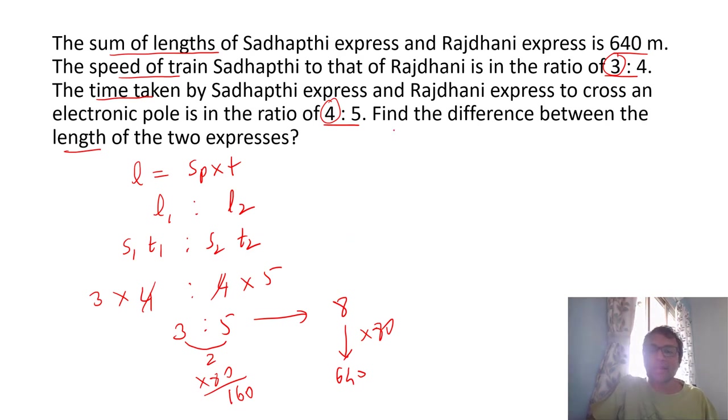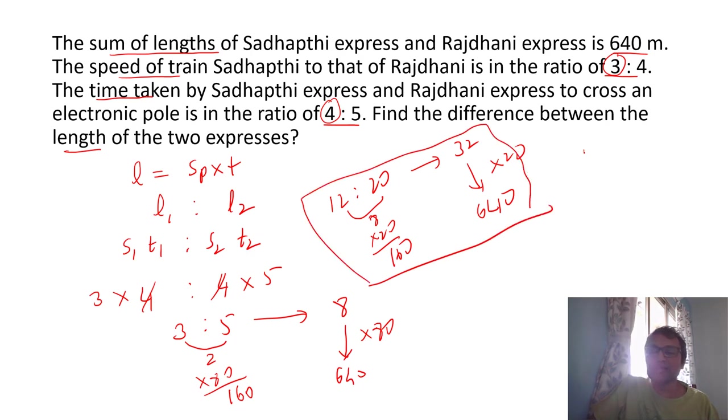So if you look at and repeat again, speed into time, if I can directly do 4 times 3 is 12, 4 times 5 is 20. So if I look at 12 and 20 also the total becomes 32. 32 to get 640 is times 20. Difference is 8 into 20, which will give you 160. Anyway you do, you will get the answer as 160. So the answer will be 160 meters.